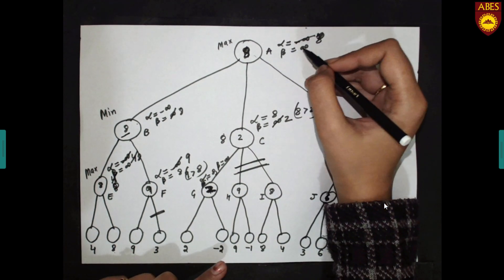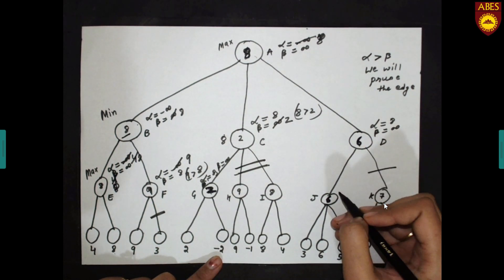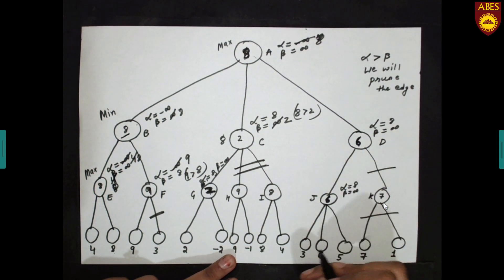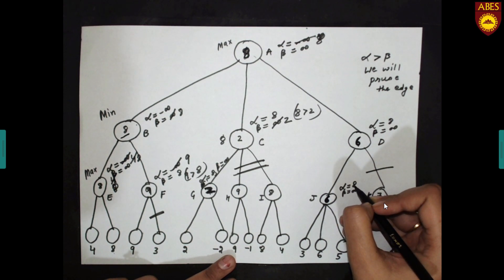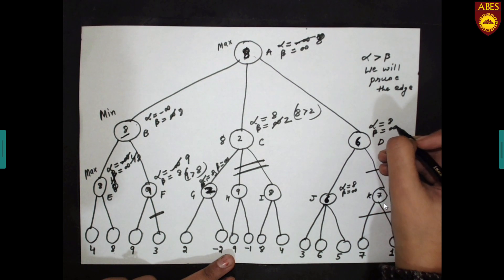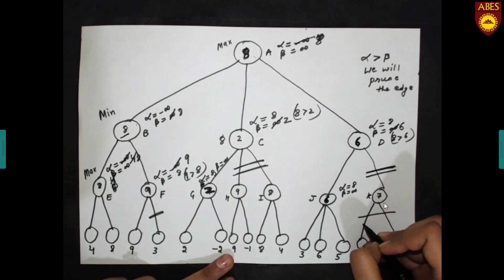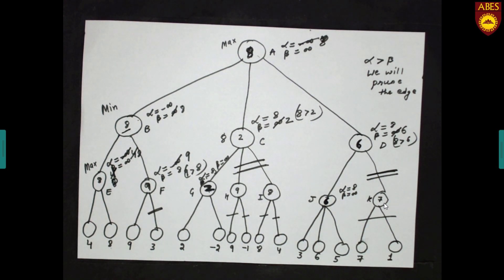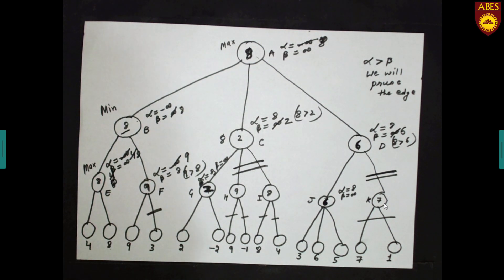Moving to the third child: alpha = 8, beta = ∞ travels downward. Out of 3, 6, and 5, the maximum is 6. Alpha already has value greater than 6, so the local value is 6. Since the parent is a minimum node, beta updates to 6. Now alpha = 8 is greater than beta = 6, so this node is pruned — meaning all subsequent child nodes are also pruned. We can see that various nodes are pruned and we still find the same value of 8 at the root node. Thank you — this was about alpha-beta pruning.